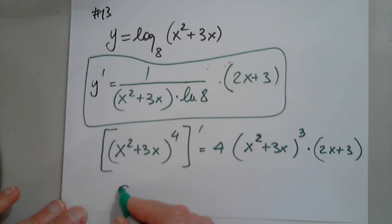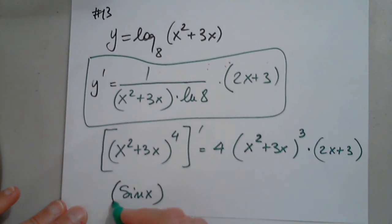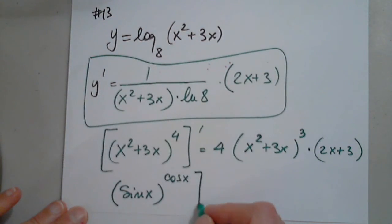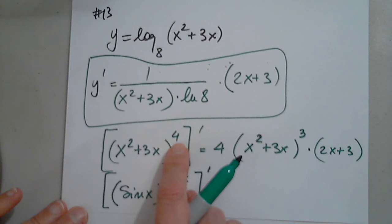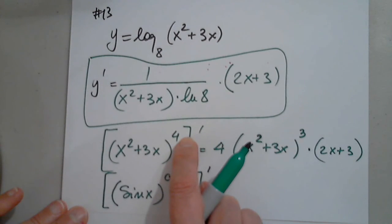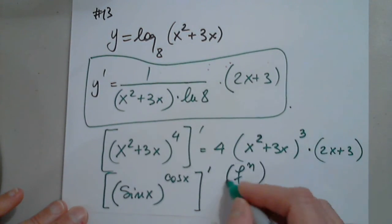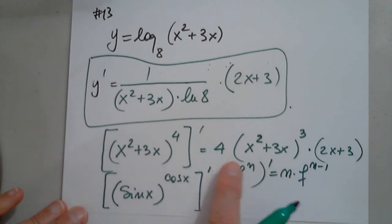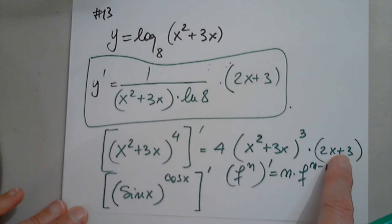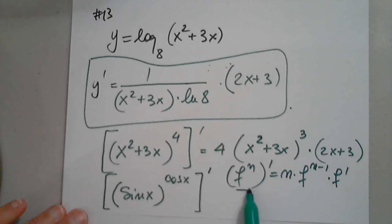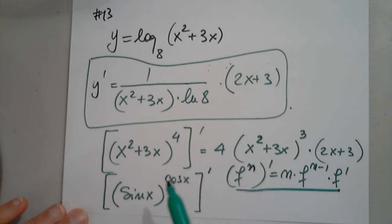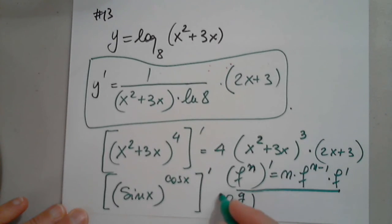Here is another question: differentiate sine x raised to the power cosine x. Notice this is a function raised to a function, not a function raised to a constant. The formula f to the n gives n times f to n minus 1 times f prime, but that applies when n is a number — this is not that situation.